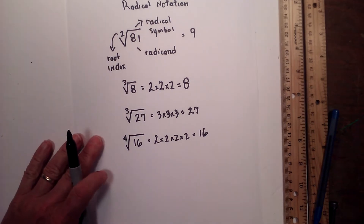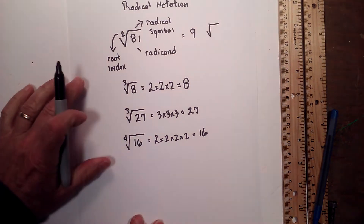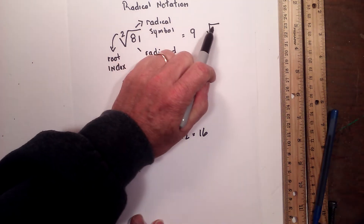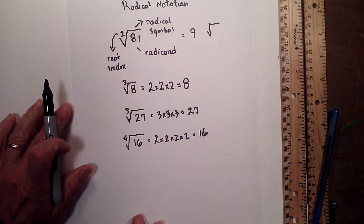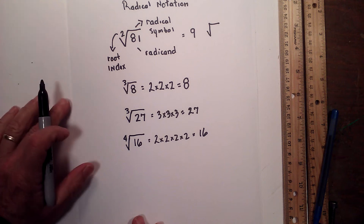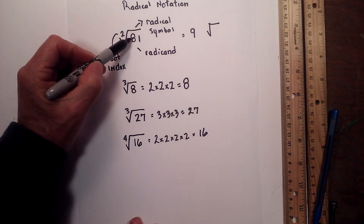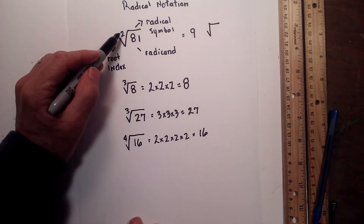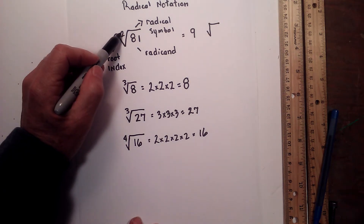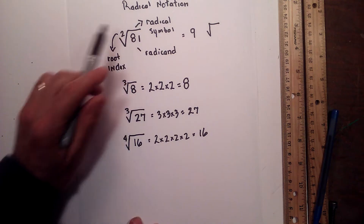Many times you will see this just written like this, and that is a radical symbol and you just assume it's square root. Technically a 2 would be there. What's underneath is called the radicand, and that is the number that you're going to find — the numbers that multiply to equal that number.